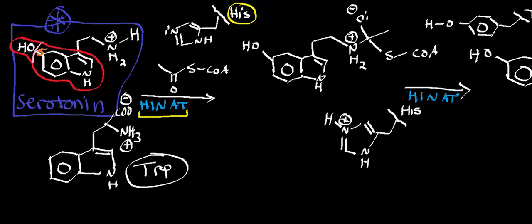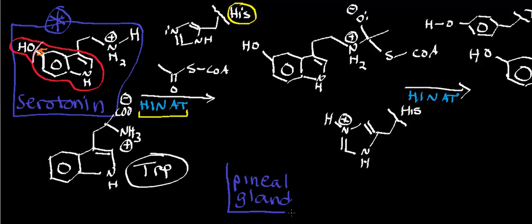Welcome back to the playlist on amino acids. In this video, we're going to look at the biosynthesis of melatonin from a neurotransmitter called serotonin. Melatonin is not necessarily a neurotransmitter — it's actually a hormone produced by the pineal gland, a structure in the epithalamus. This is the glandular tissue in the brain that produces melatonin, and it does so from serotonin.